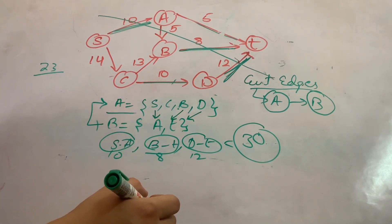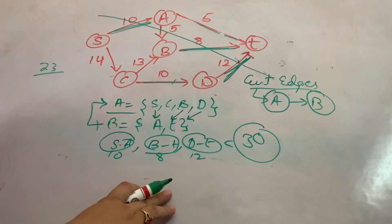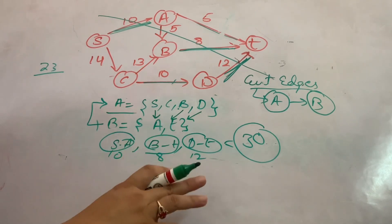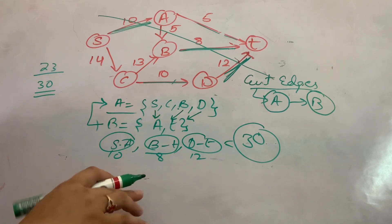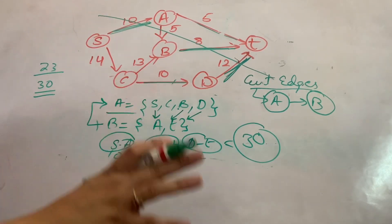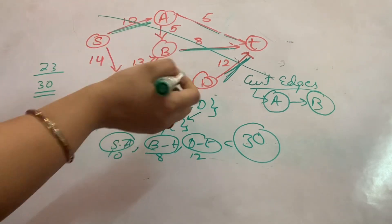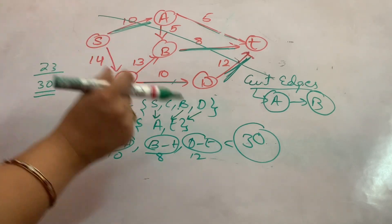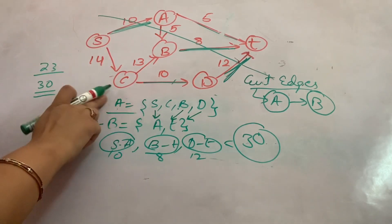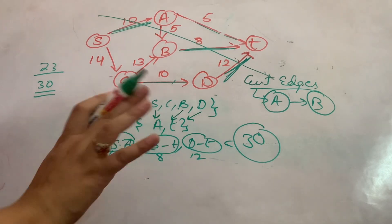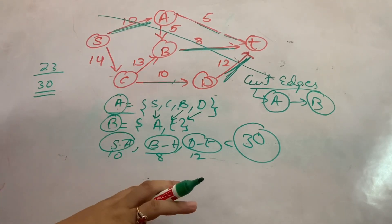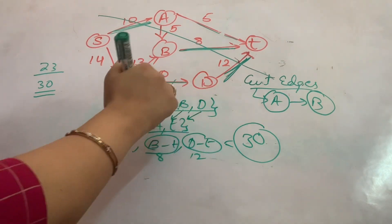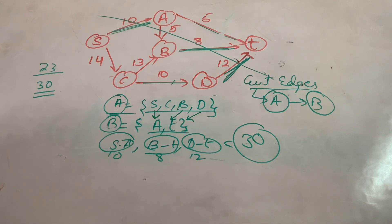The cost of this second cut: S to A is 10, B to T is 8, and D to T is 12. Summing them gives 30. So this cut costs 30. The problem of finding the minimum cut is to cut the graph into two parts where the cost is minimum. Many cuts are possible, but we want the one with minimum total edge weight going from A to B, where at least one node is in each partition.